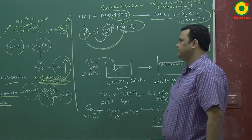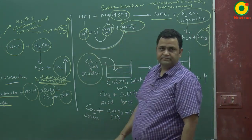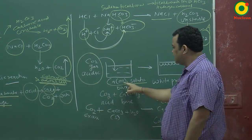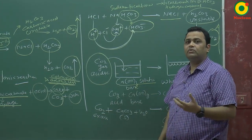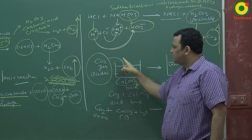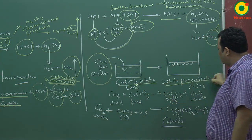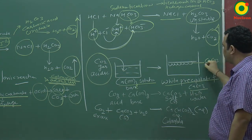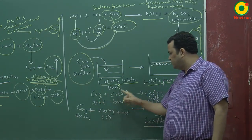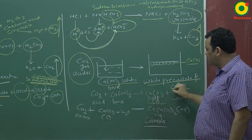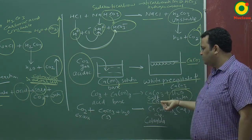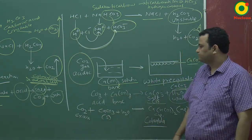CO2 gas is liberated and is acidic in nature. If we pass this CO2 gas through calcium hydroxide solution — a base — a white precipitate is formed. Calcium hydroxide is made by adding CaO (quicklime) to water. When CO2 is passed through Ca(OH)2, a white precipitate of CaCO3 (calcium carbonate) is formed, because CO2 (acid) reacts with Ca(OH)2 (base) to form the salt CaCO3 and water.